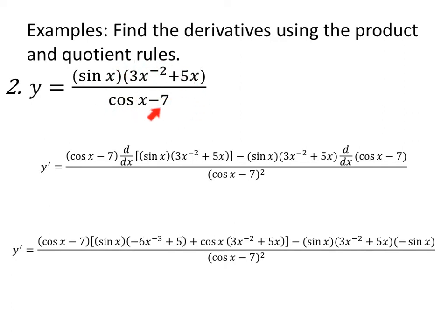For this, we have an overall quotient in which the numerator, or the high part of our quotient rule, has a product in it. So we'll take low, d high — written in derivative notation — minus high, d low, all over low squared. This is a great way to write it to remind yourself when there are multiple rules going on: I'm using the product rule within the quotient rule. Or in the past example, the quotient rule within the product rule.